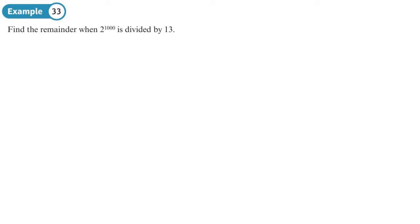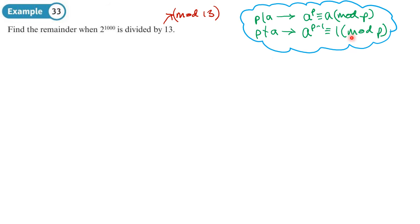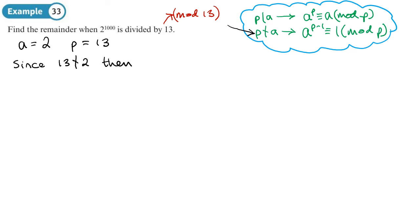This question asks: find the remainder when 2 to the power 1000 is divided by 13. Whenever you see 'divided by something' it tells you the modulus, so this is a mod 13 question. The value of a is 2 and p is 13. Since p does not divide a, we use the second rule: 2 to the power p minus 1, which is 2 to the power 12, is congruent to 1 under mod 13.